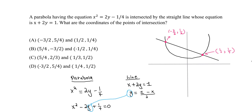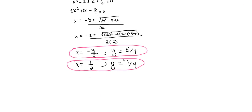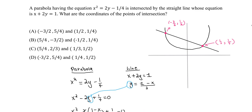So our correct answer based on these should be — the first intersection point is negative 3 over 2, 5 over 4, and the second is 1 half, 1 over 4. The right answer should be option A. I hope that helps — let me know if you have questions.